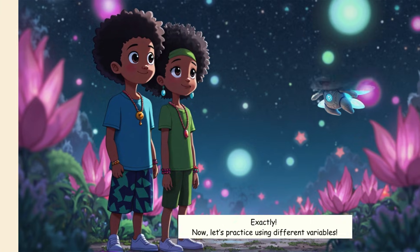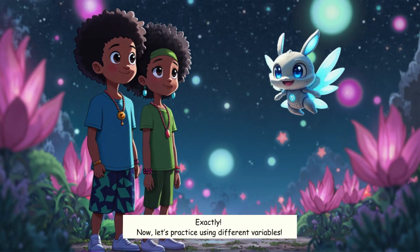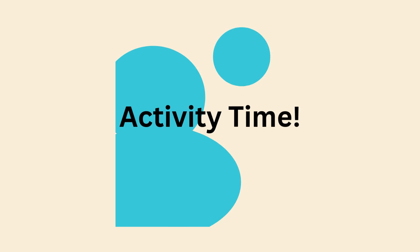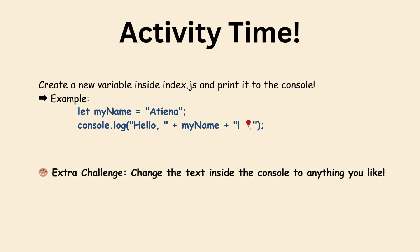Exactly. Now let's practice using different variables. Activity time! Create a new variable inside index.js and print it to the console. Example: let myName equals Atiyina; console.log hello plus myName. Extra challenge: change the text inside the console to anything you like.